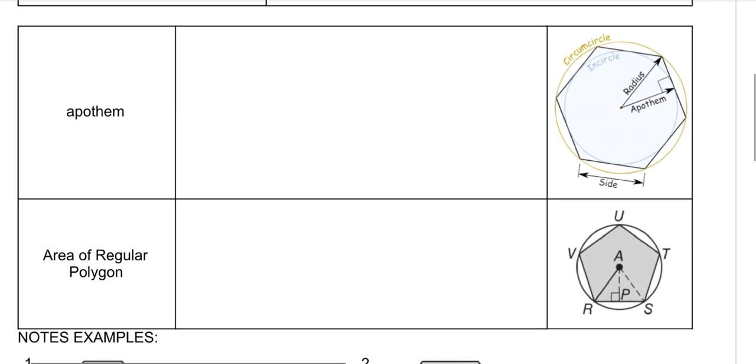Whenever we find the area of a regular polygon, we need to know what the apothem is. On any regular polygon, it's always from the midpoint of a side to the center of that polygon. So this right here is my apothem.